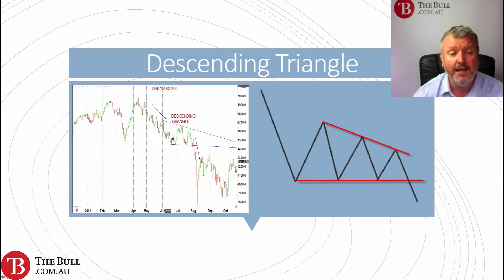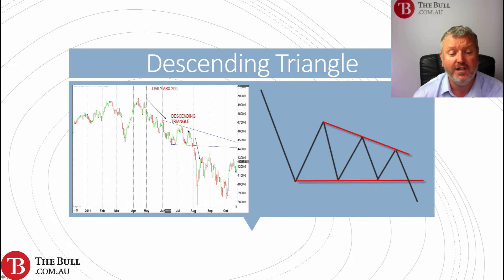Here again with the daily ASX 200 chart: the market previously in a downtrend, we have a descending triangle with lower highs and lows around the same level, occurring June through July. Then in late July through early August, we have an acceleration lower — a continuation pattern of the previous downtrend.